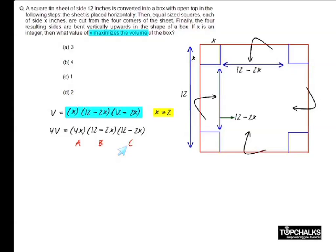Now, when 4v is maximum, it happens at the same time when v is maximum. Which means, I would now try to find when is 4v maximum. We know that 4v is the product of three values a, b and c, where a plus b plus c happens to be a constant equal to 24.